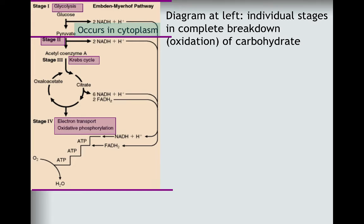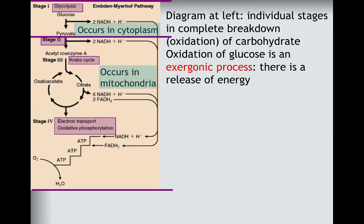This occurs in the mitochondria, the cell's powerhouse. The mitochondria is referred to as the powerhouse because this is where the majority of ATP is synthesized. Oxidation of glucose is an exergonic process, meaning that there's a release of energy.